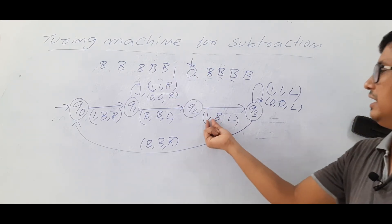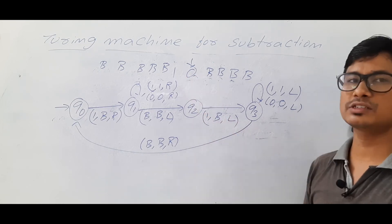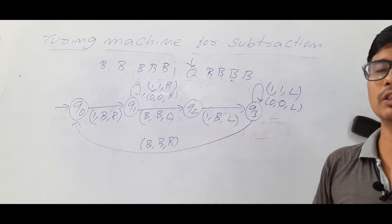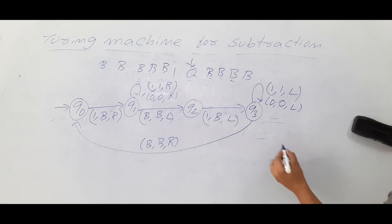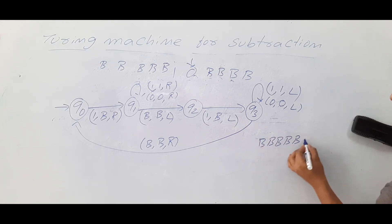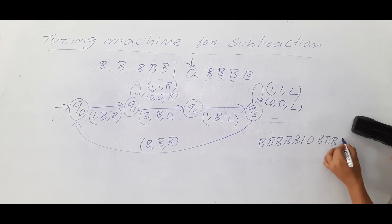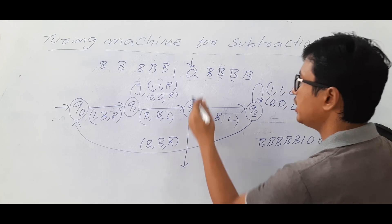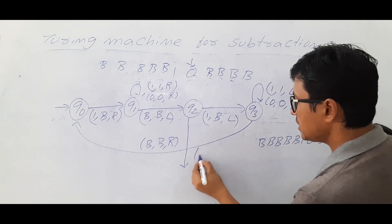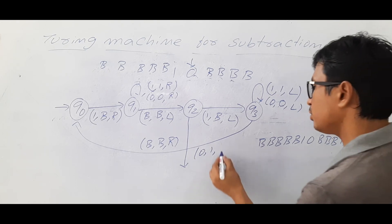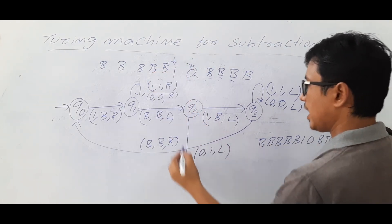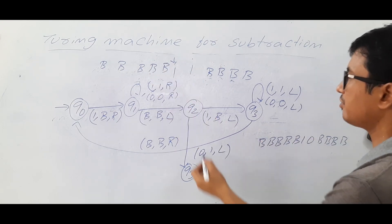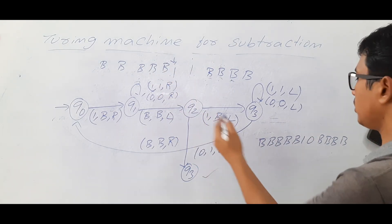Now in state q2, if I find a 0 instead of a 1, it means all the ones on the n side have been cancelled. At that point the tape would show five blanks, a 1, a 0, then four blanks — which is not the correct output. So in state q2, if I see a 0 I convert it into a 1 and move to the left, reaching state q3.